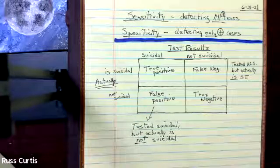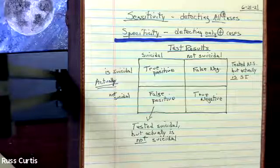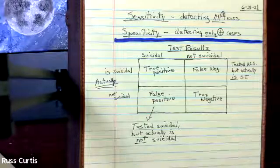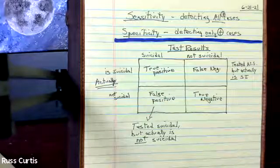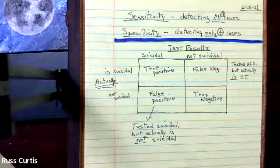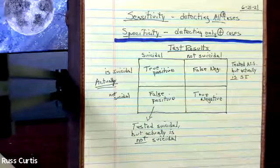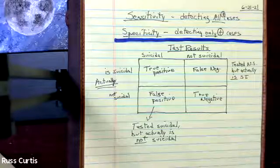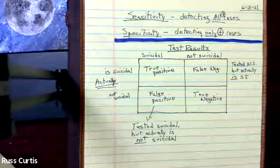we are going to decrease the sensitivity. So we're going to miss some people that do actually have depression, but we are going to make sure that there's nobody within the score that don't have depression that fit within that category. So I know that's a little confusing.